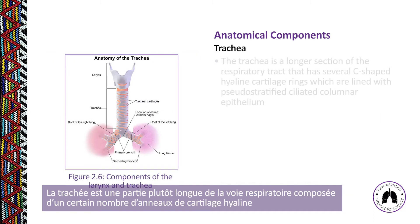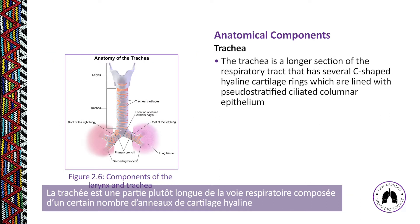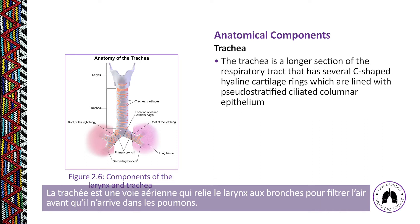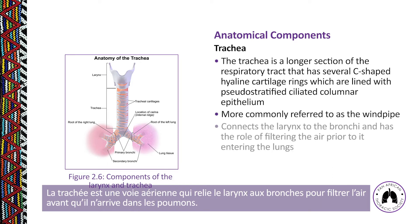The trachea is a longer section of the respiratory tract with several C-shaped hyaline cartilaginous rings, lined with pseudo-stratified ciliated columnar epithelium. More commonly called the windpipe, it connects the larynx to the bronchi, and its role is to filter the air prior to it entering the lungs.